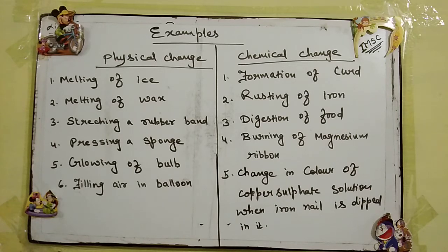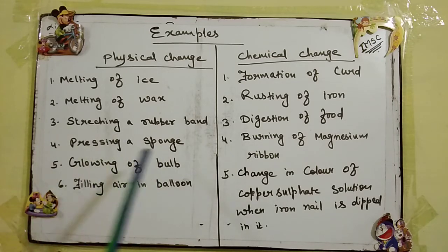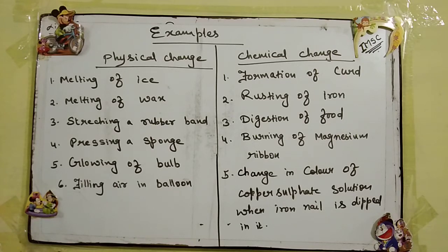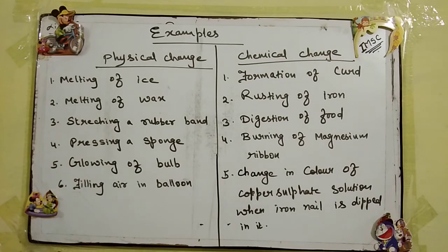Some examples of physical change: melting of ice, melting of wax, stretching a rubber band, pressing a sponge, glowing of bulb, और filling air in balloon — ये सभी physical changes हैं. इनमें only change in shape, size or state takes place — solid to liquid, liquid to gas, and it is a reversible, temporary, and fast change. जैसे rubber band stretch करोगी तो उसका size बड़ा हो जाएगा और वापस छोड़ोगी तो it will regain its original position — so it is a reversible change.